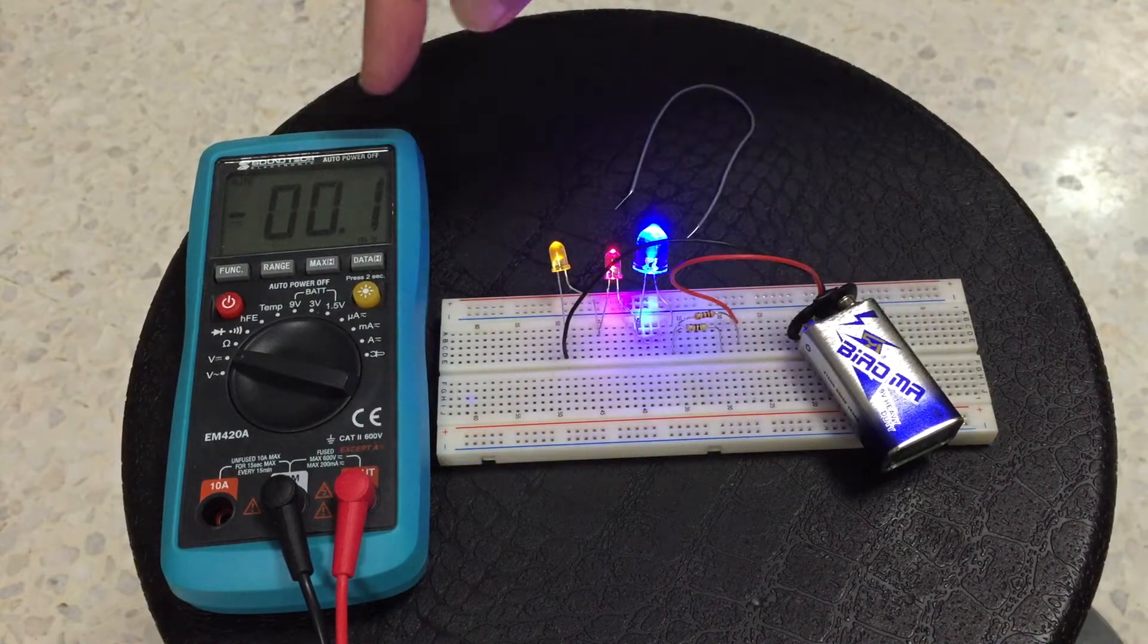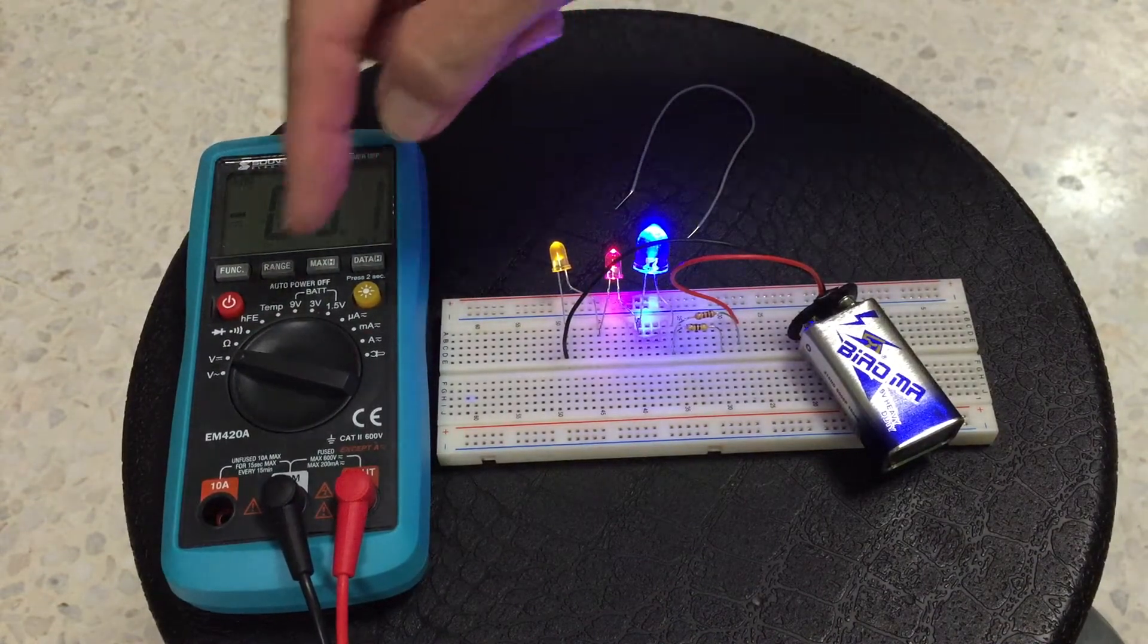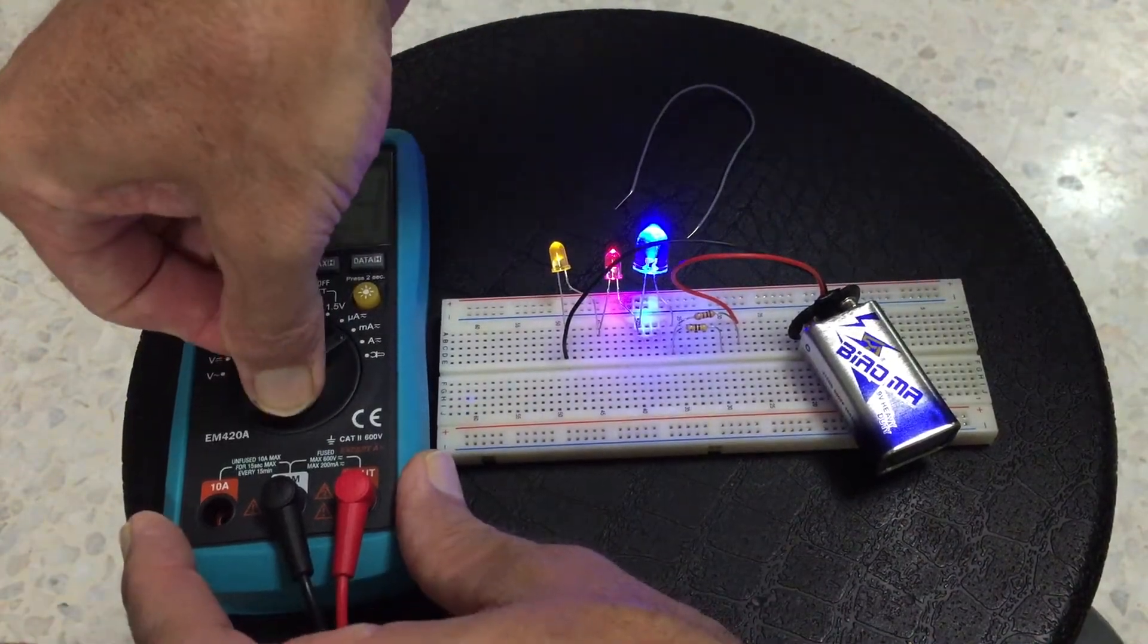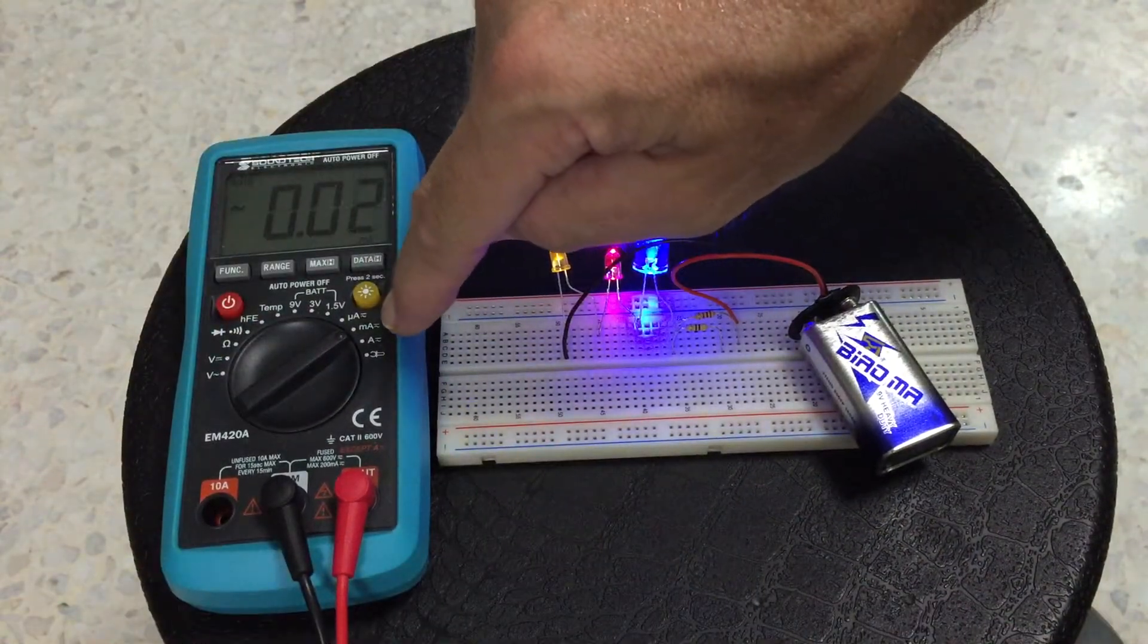We can still use the multimeter. We were just using a voltage measurement. We're now going to go click click click click click to the milliamps of current.